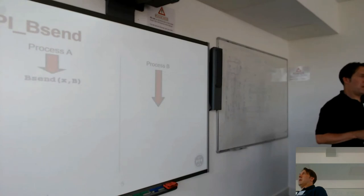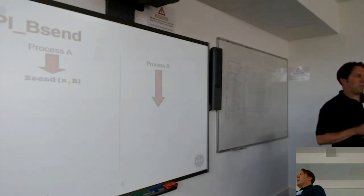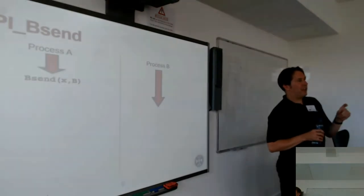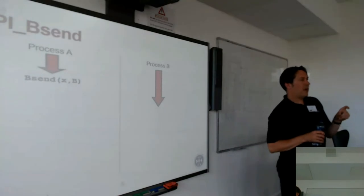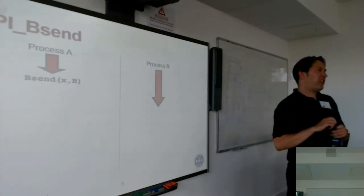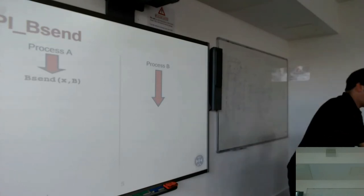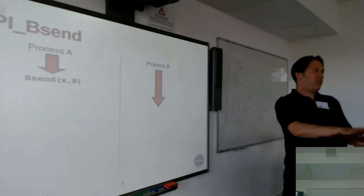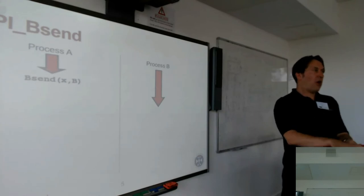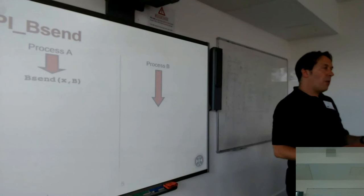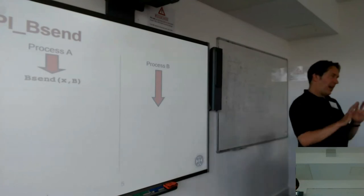There's no such thing as a buffered receive — a receive is just a receive, it matches any send. Non-blocking receive: rather than waiting for data to come in, you say: I want to receive a message — when it comes in, put it there. In MPI that's called a non-blocking receive, not buffered. You're saying: when the message comes in, put it there and I'll go away and do something else and come back.